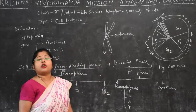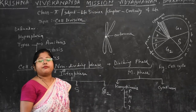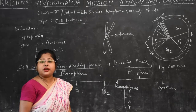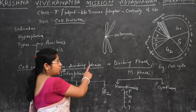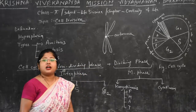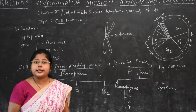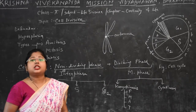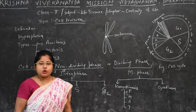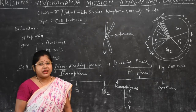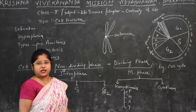During S phase, we also have the synthesis of histone protein, and we know that DNA is wrapped around histone protein. In this phase, the number of chromosomes does not increase; rather, the content of the chromosome gets doubled. So the ploidy level remains the same — only the content gets doubled in S phase.